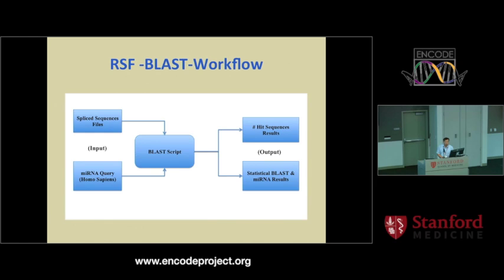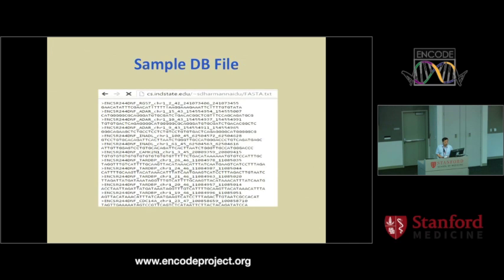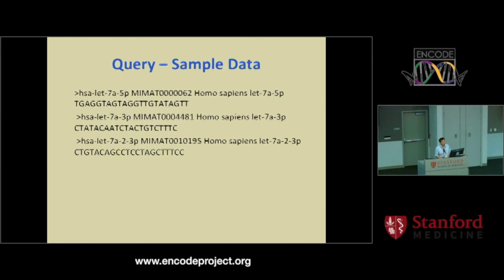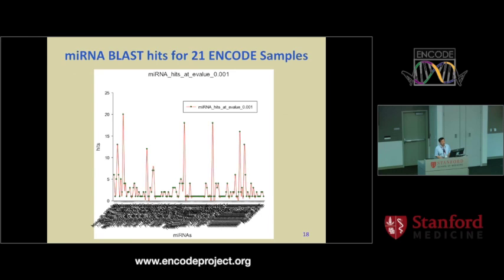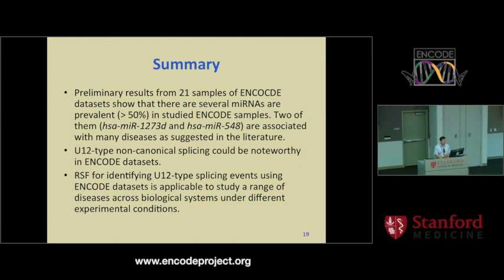The RitzSplig Fly pipeline also has a BLAST function that uses a microRNA database to look at microRNA signatures in the splice sequences. We did a brief check of this microRNA database to see whether there is a prevalence of disease-associated microRNAs in the ENCODE dataset. Across the same 21 ENCODE samples, we found that some microRNAs appeared in more than half of these 21 samples, indicating certain microRNAs could be prevalent, and two of them have been associated with certain diseases.